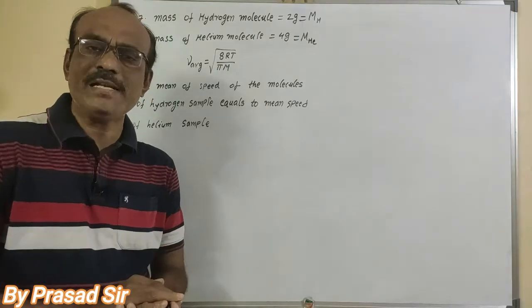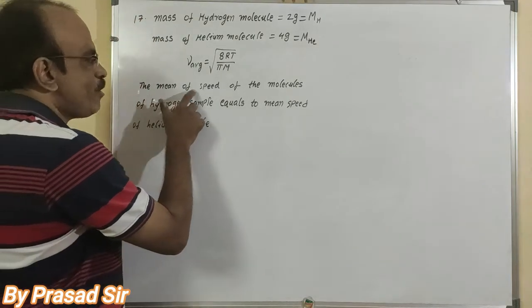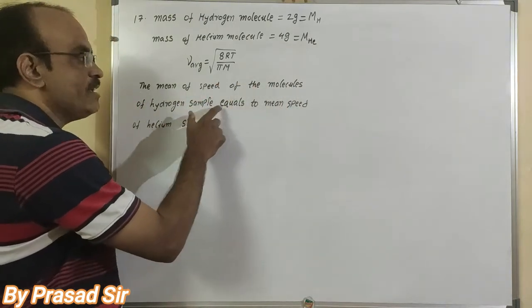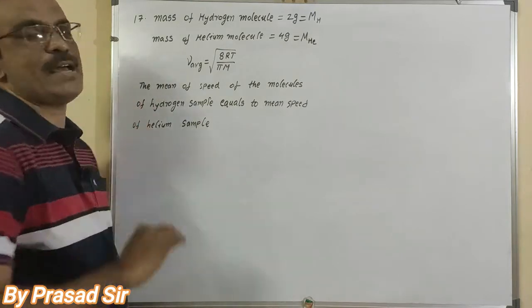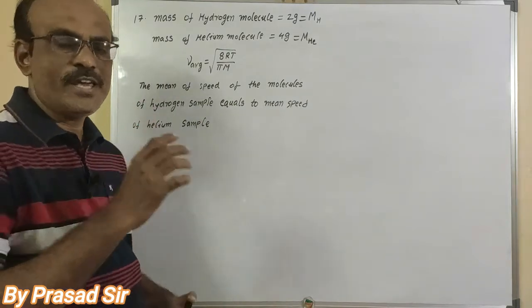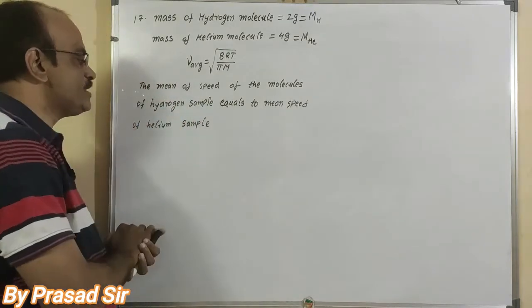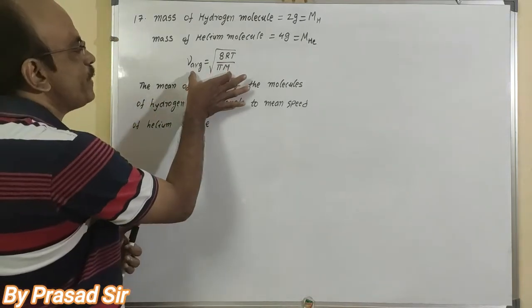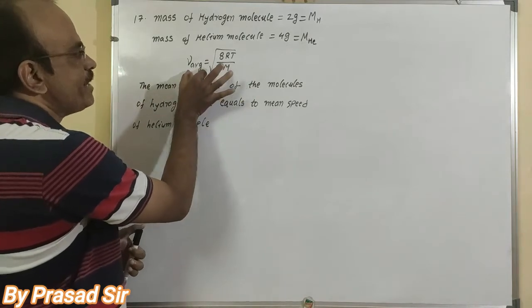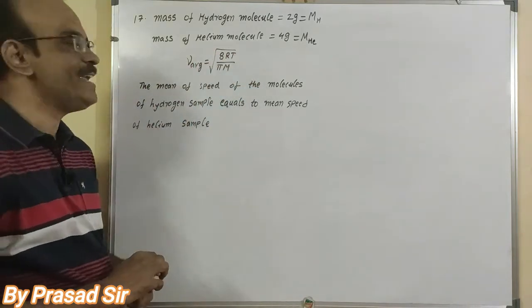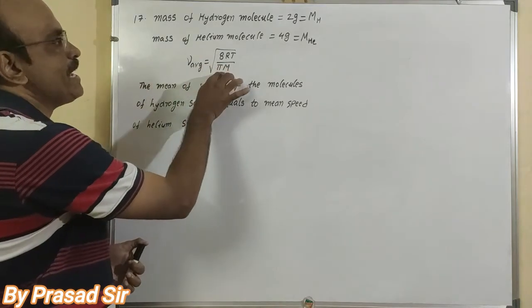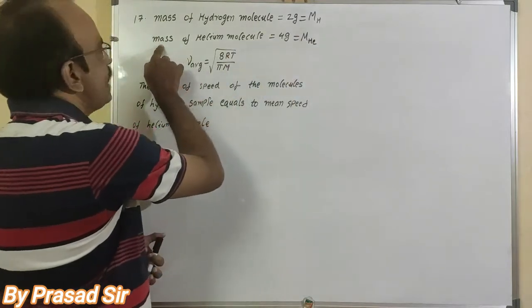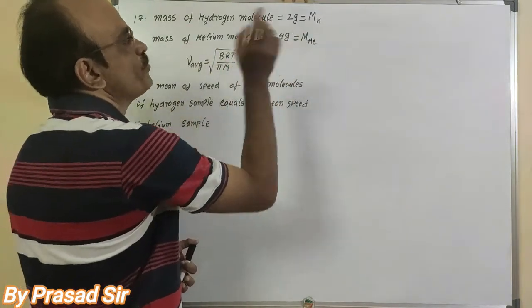In question number 17, given: the mean speed of the molecules of the hydrogen sample is equal to the mean speed of the helium sample. The mean speed formula is V_average = √(8RT / πm), where m is the molecular weight. The molecular weight of the hydrogen molecule is 2 grams and the molecular weight of the helium molecule is 4 grams.